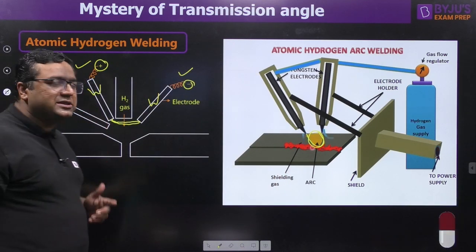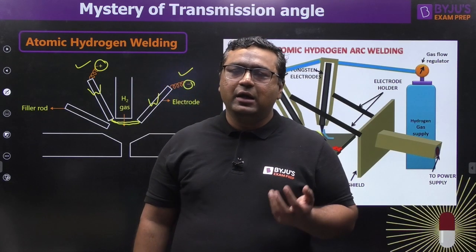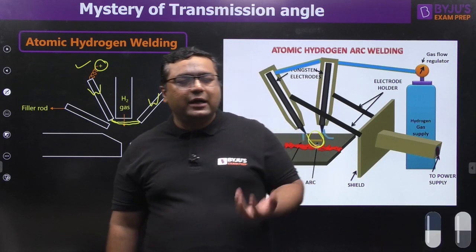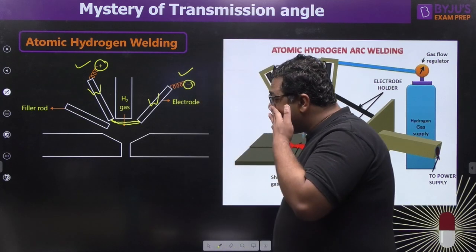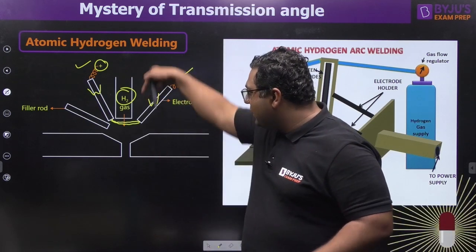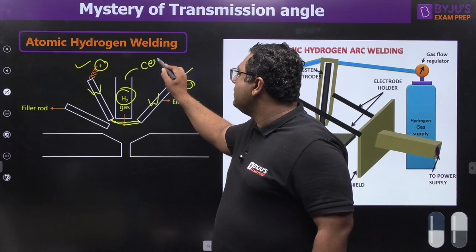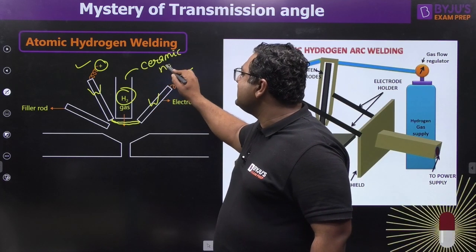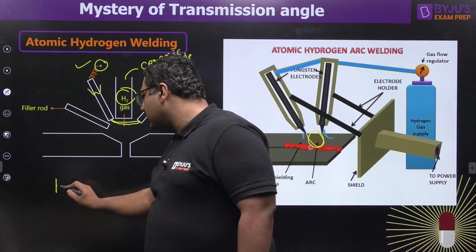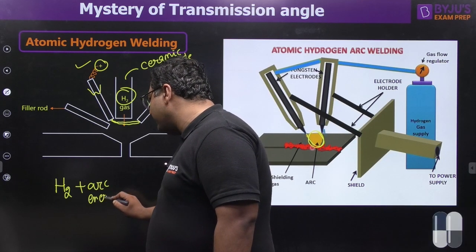When the arc is generated between the electrodes, we are not using that arc energy directly for welding. Instead, we provide hydrogen gas through a ceramic nozzle. When this hydrogen gas enters the arc zone, it gets energy from the arc and breaks into ions.